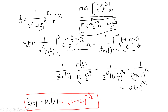Let's quickly remind ourselves what the gamma function is. If you change t to at, where a is a real number greater than zero, then you can define this as the general formula.